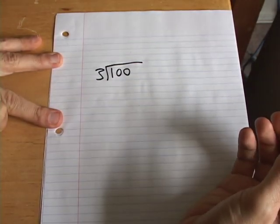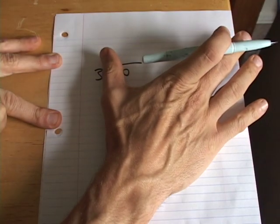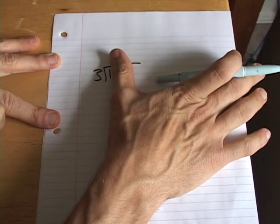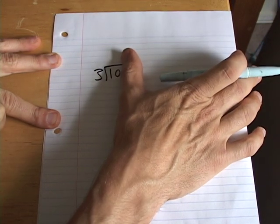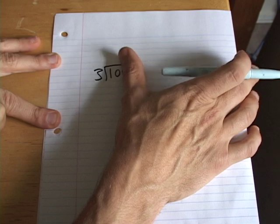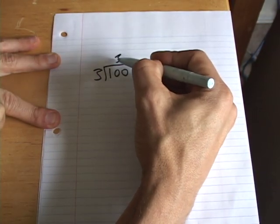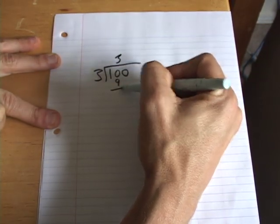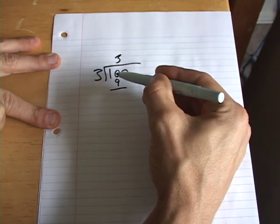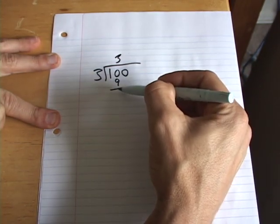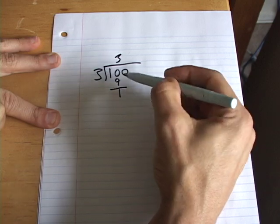From a conventional way of doing things, you first see how many times does 3 go into 1. And of course it doesn't, so then you go how many times does 3 go into 10. And 3 goes into 10 three times, so you put a 3 here. 3 times 3 is 9. 9 from 10 makes 1.